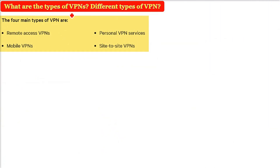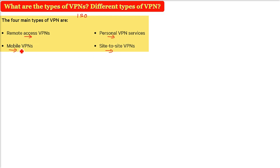What are the different types of VPNs? There is no ISO or IEEE categorization, but there are four main types: first is remote access VPNs, then you have personal VPN services, site-to-site VPNs, and mobile VPNs.